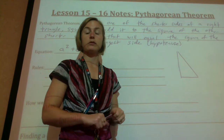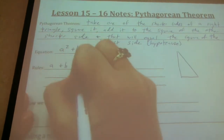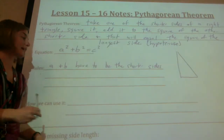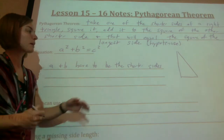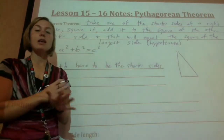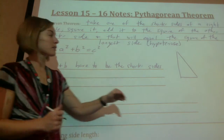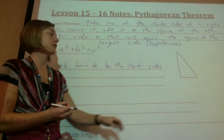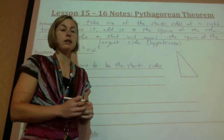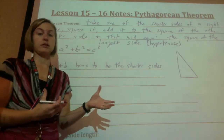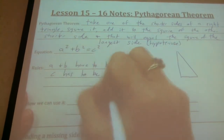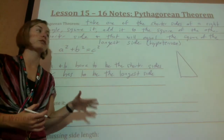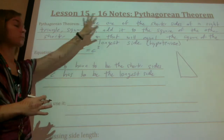The first rule is that A and B have to be the shorter sides. If you get them mixed up and call the longest side A or B, it won't work. It doesn't matter which of the two shorter sides is A or B, but those two have to be A and B. The other rule is that C has to be the longest side — the hypotenuse. If you label one of the other sides as C, this principle will not work.